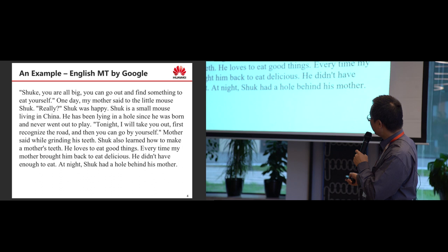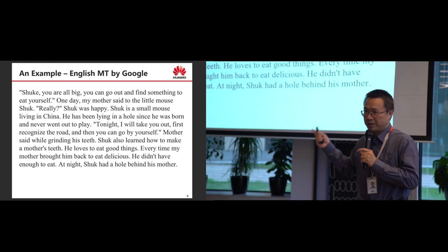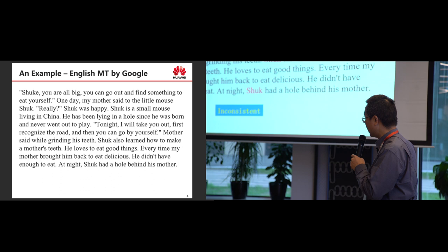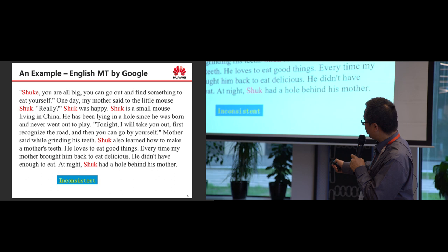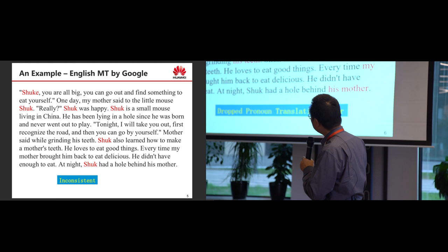You can see there are a lot of problems in this translation. Although it's quite understandable, there are still many problems. First, inconsistency: 'shook' is the name of the small mouse, and you can see it is translated differently throughout the document. Also, dropped pronouns — in Chinese this is very common. We drop some pronouns, but in English it doesn't happen so frequently, so we can see many errors here.